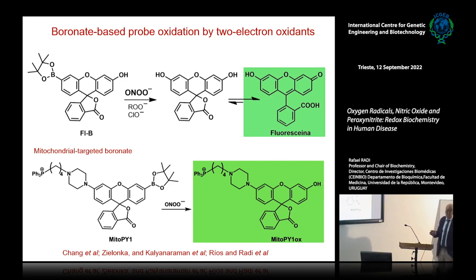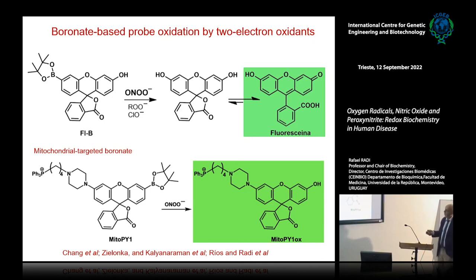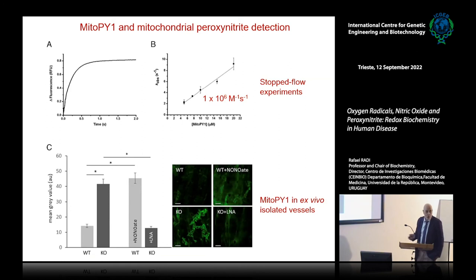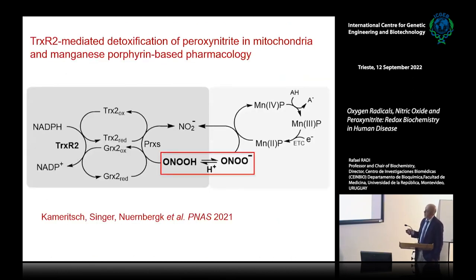We characterized and tested mitochondrial-targeted boronates as chemical probes — similar to MitoQ as a drug, we can do mitochondrial targeting of the probes. This mitochondrial-targeted boronate reacts with peroxynitrite to give fluorescence. Ex vivo in vessels from knockout animals, you can see mitochondrial formation of peroxynitrite correlating to vascular dysfunction and alteration of integrity. Natalia Rios from the lab is developing redox probes to visualize redox intermediates in tissues. The reason this occurs is that in the thioredoxin reductase knockouts, peroxiredoxins do not have the electrons needed to decompose peroxynitride, leading to more peroxynitrite, more oxidation, more nitration, and vascular dysfunction.